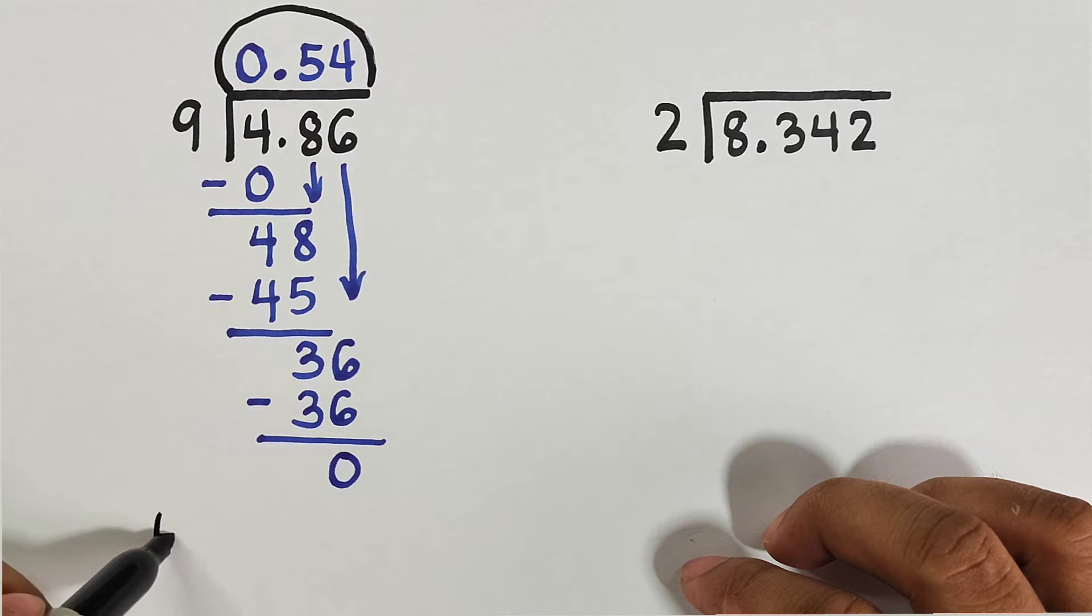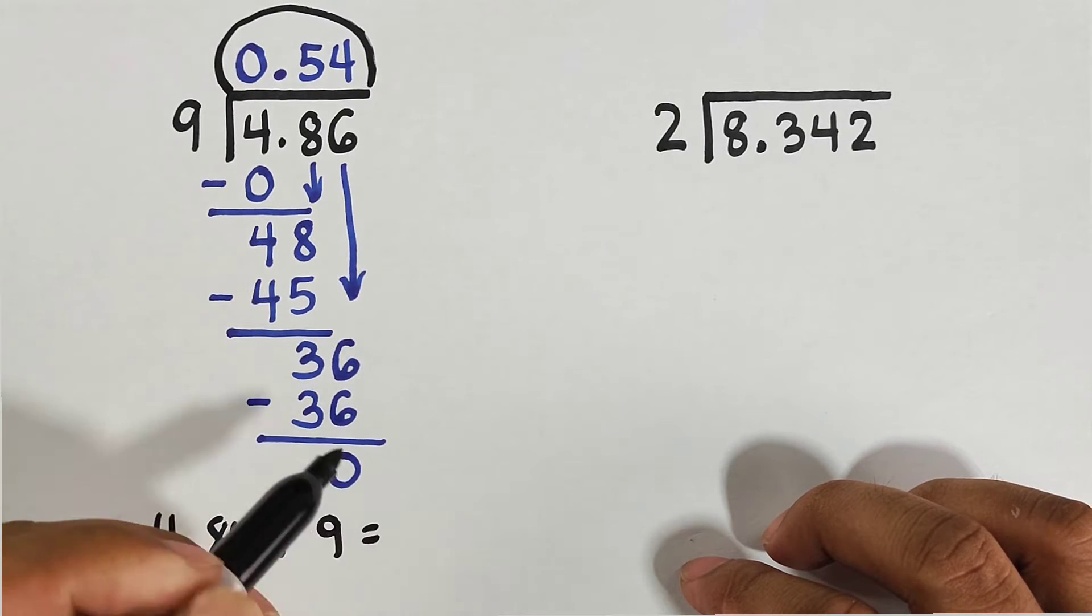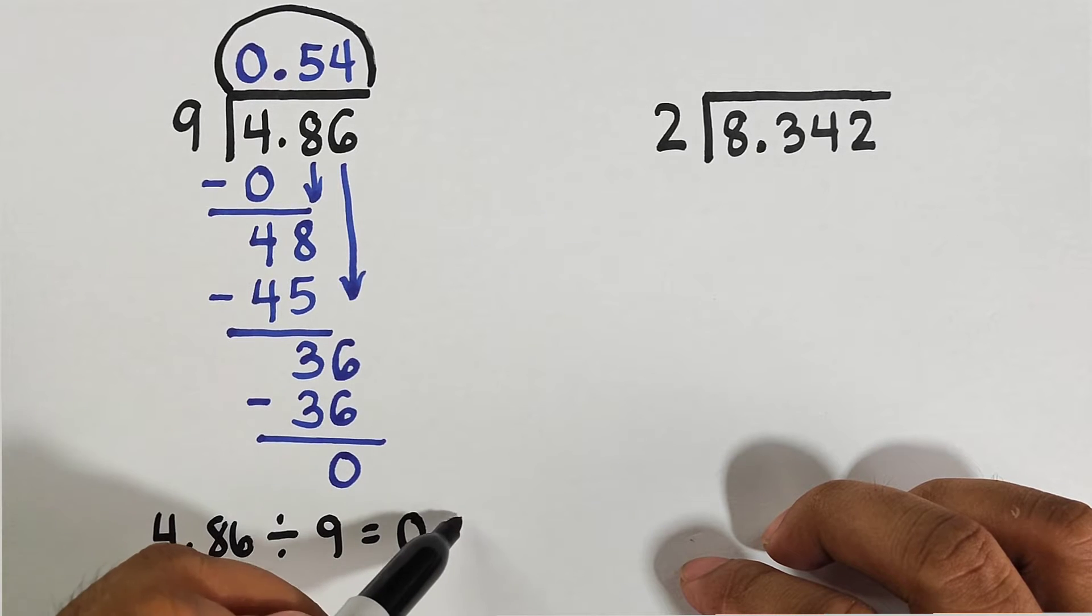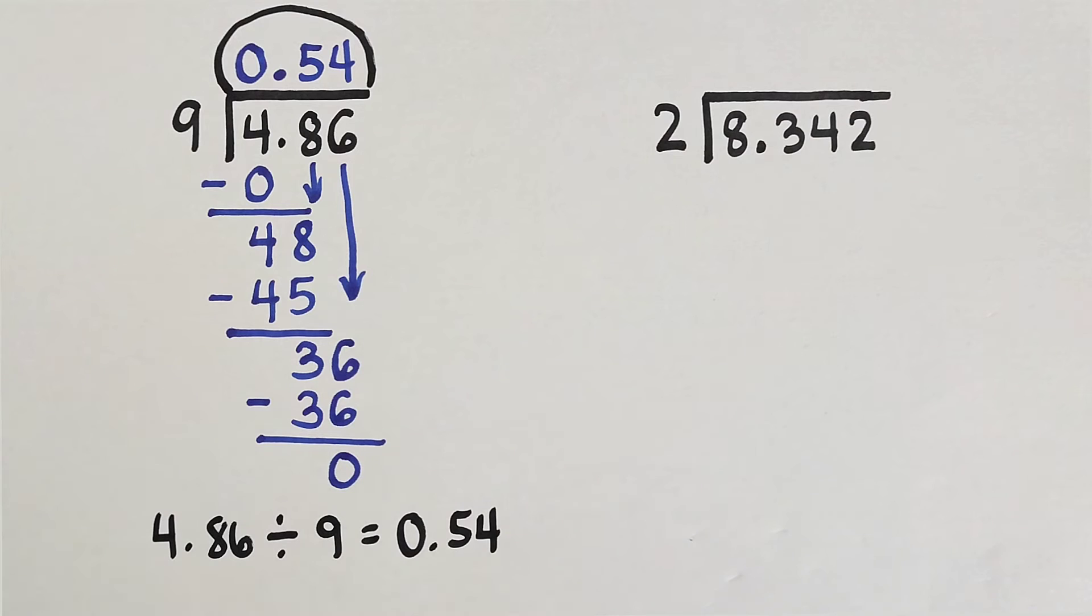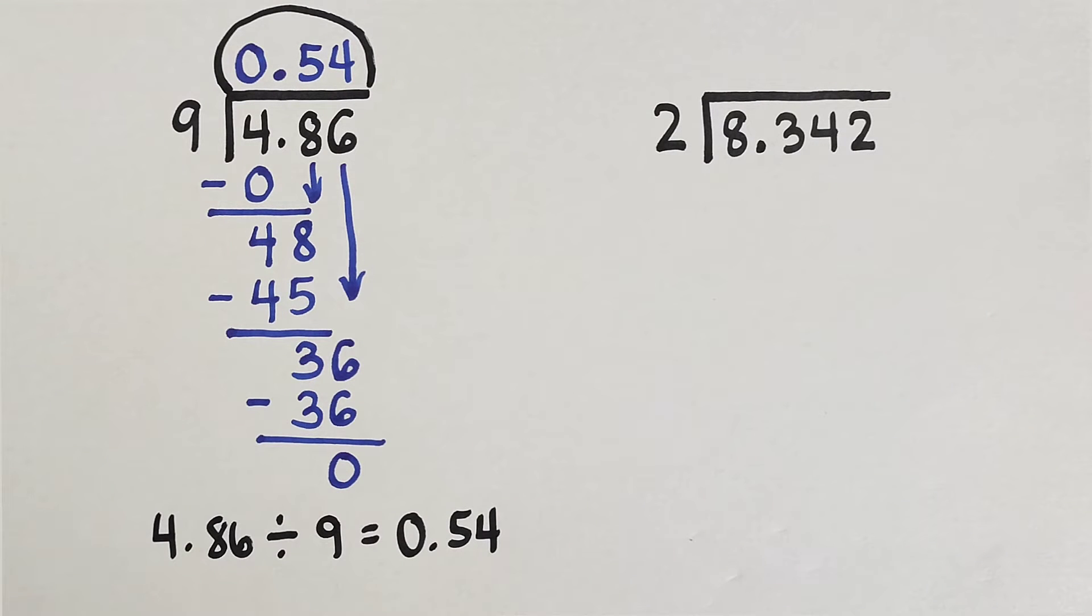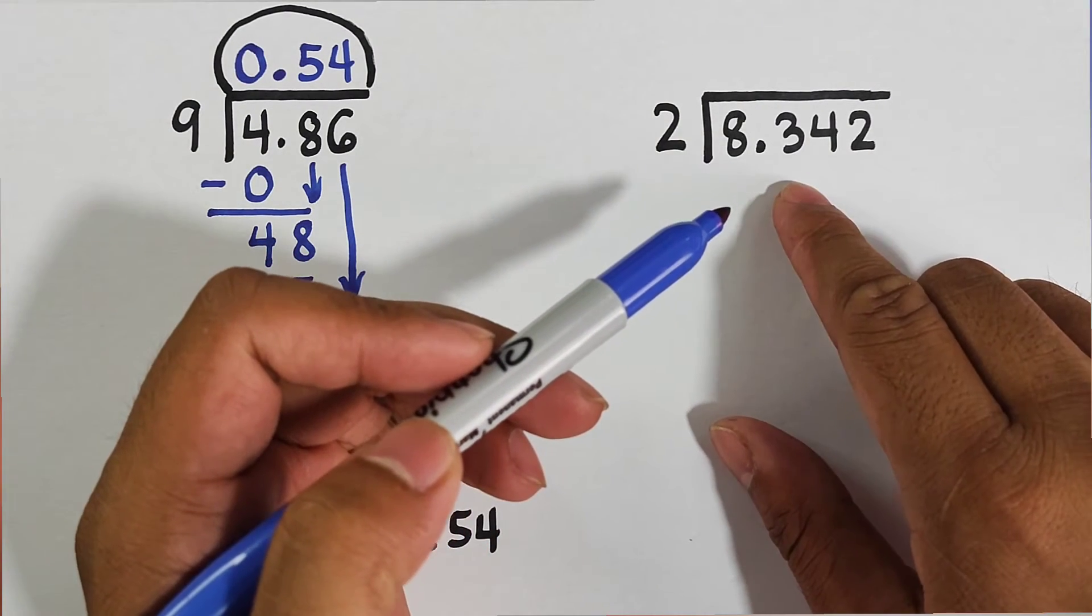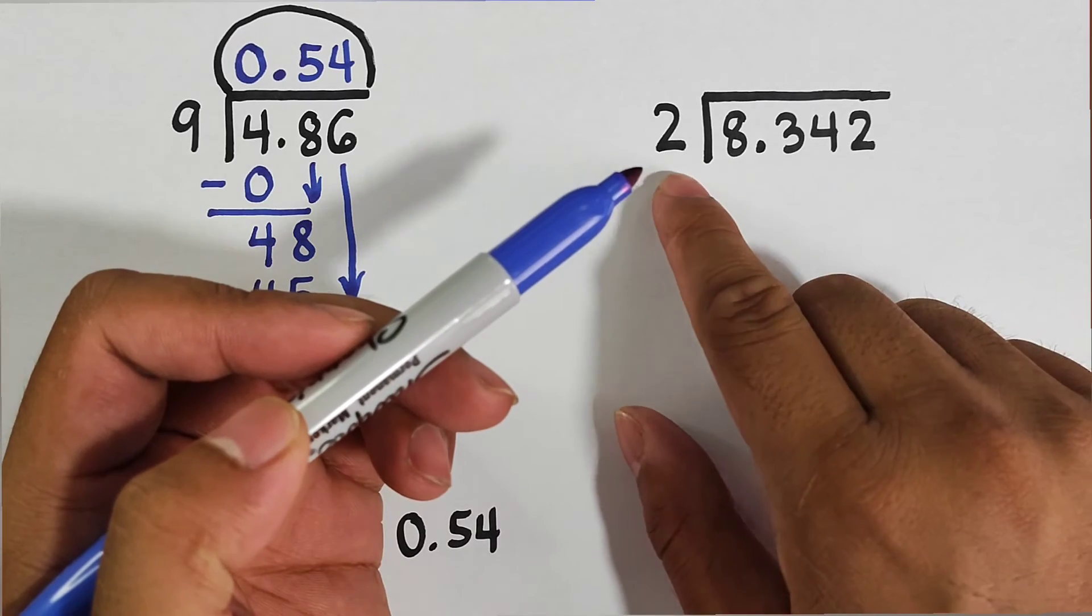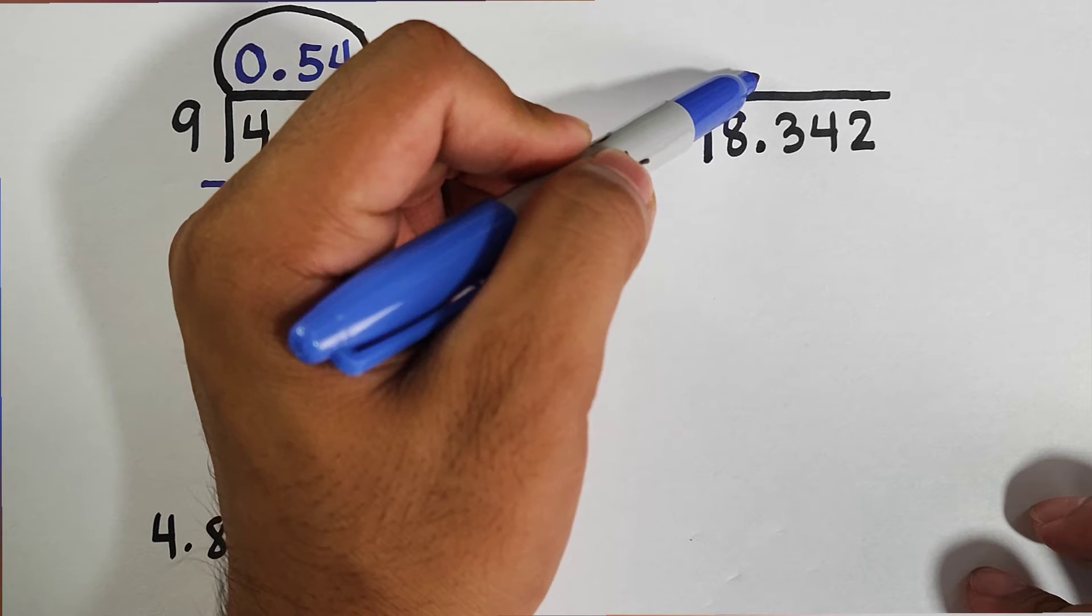Subtract this, it will become 0. As you can see, the answer here is 0.54. So we could say that 4.86 divided by 9 equals 0.54. I hope you got the first example on how to divide decimals using a whole number. Now let's move on with item number 2.